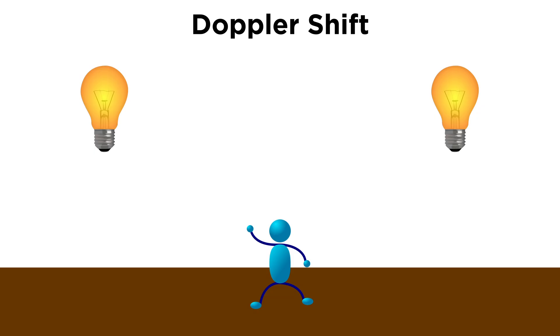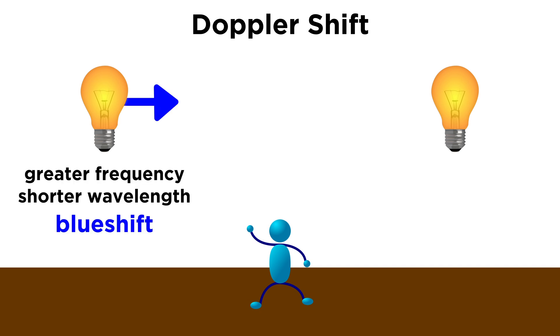Precisely the same principle works with electromagnetic waves, or light. A source of visible light that is moving towards us will have its frequency increase, and the wavelength will therefore decrease, towards the blue end of the visible spectrum. We call this a blue shift.